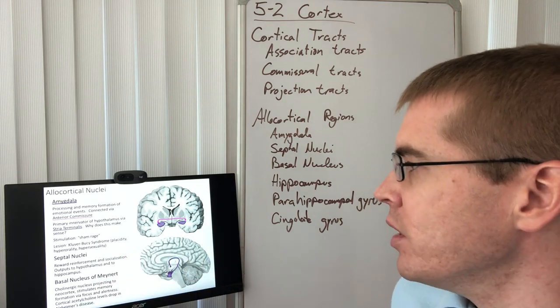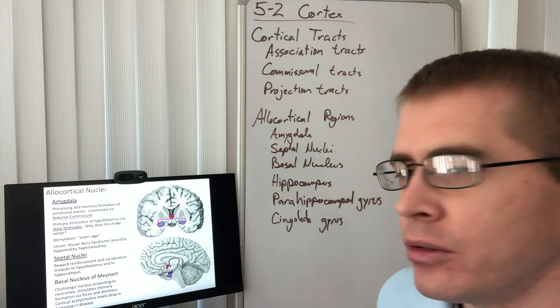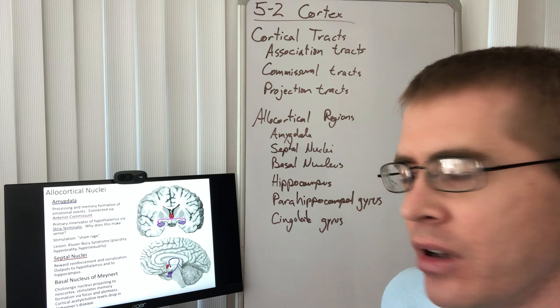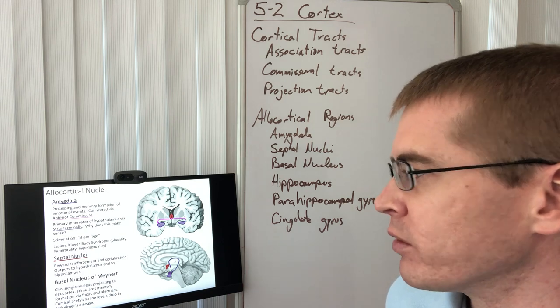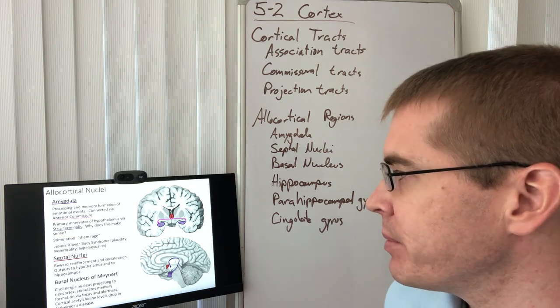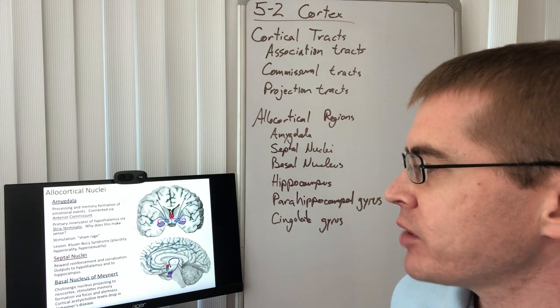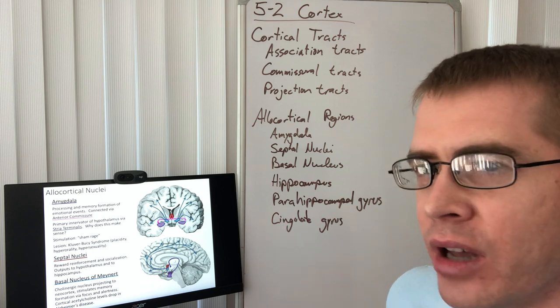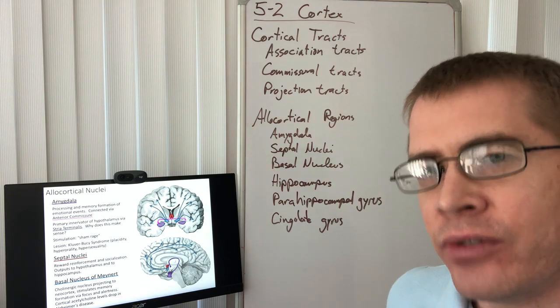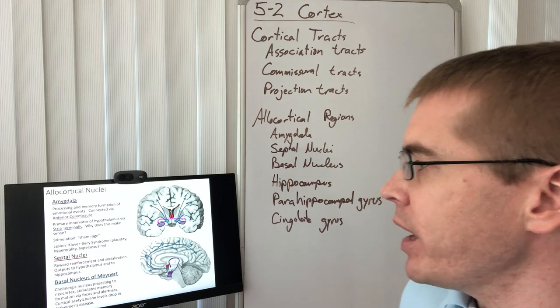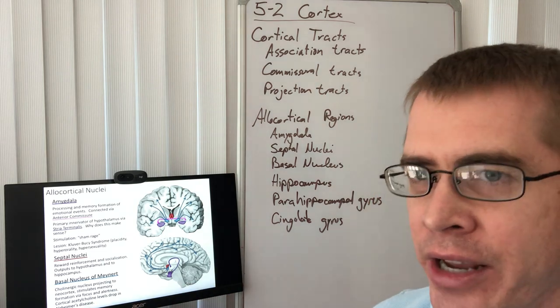So moving on, septal nuclei. Septal nuclei are a reinforcement for reward type of things, especially during socialization. So it has projections, especially to the hypothalamus and hippocampus because it's involved in memory and with this autonomic response. And then we have the basal nucleus of Maynard.